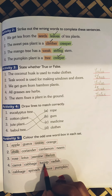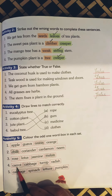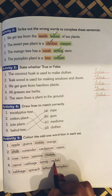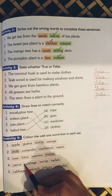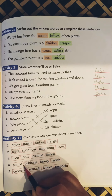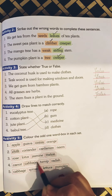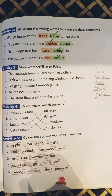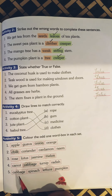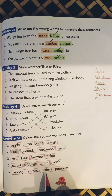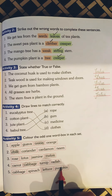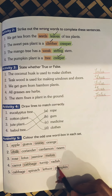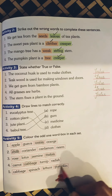Carrot, cabbage, turnip, radish. Now carrot, turnip and radish grow under the ground, whereas cabbage does not grow under the ground. So we will color cabbage. Come to the next point: cabbage, spinach, lettuce and pumpkin. Cabbage, spinach and lettuce — all 3 are leaves, whereas pumpkin is not a leaf. So we will color pumpkin.